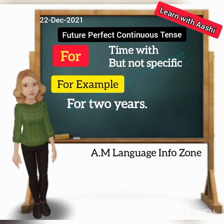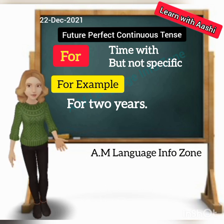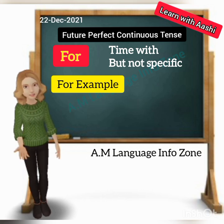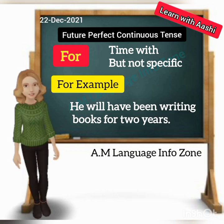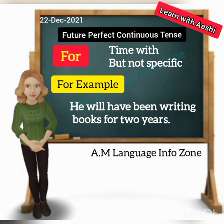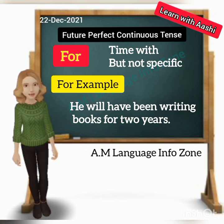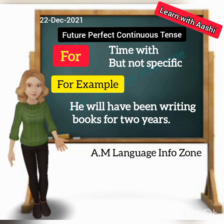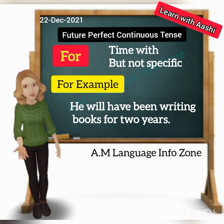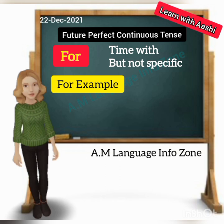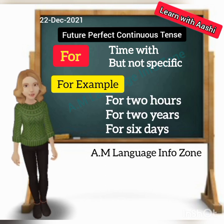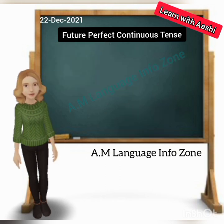We use 'for' when we don't know which specific period is referred to — for example, 'for two years.' We don't know which two years exactly. So we can use 'for two hours,' 'for six days,' etc. Now let's start practicing some sentences.